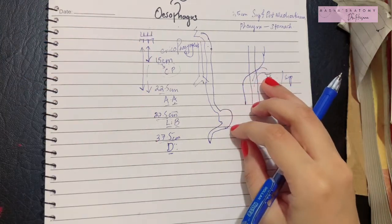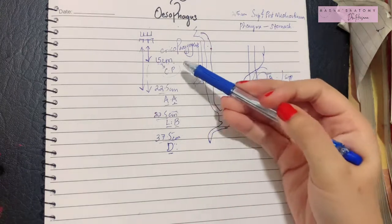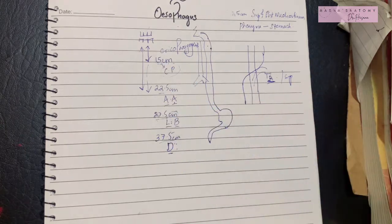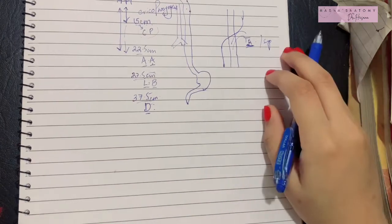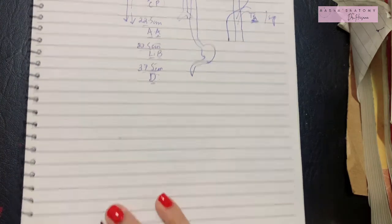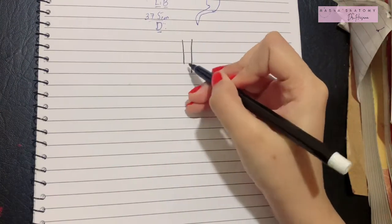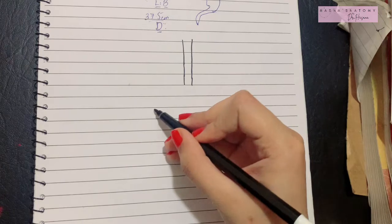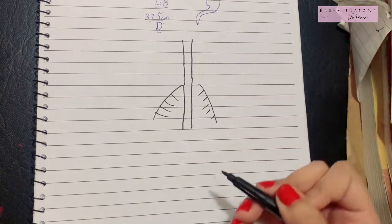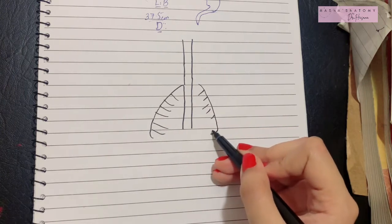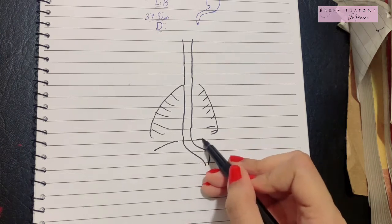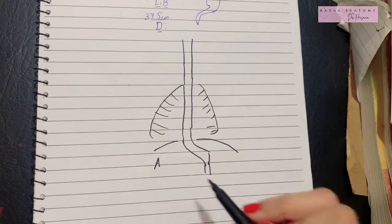So those were the four constrictions: their locations, their distances from the incisor teeth, and what structure is being crossed at each. Now let's talk about the blood supply of the esophagus. For ease, let's divide the esophagus into the cervical part (outside the thorax), the thoracic part (inside the thorax), and the abdominal part (below the diaphragm).